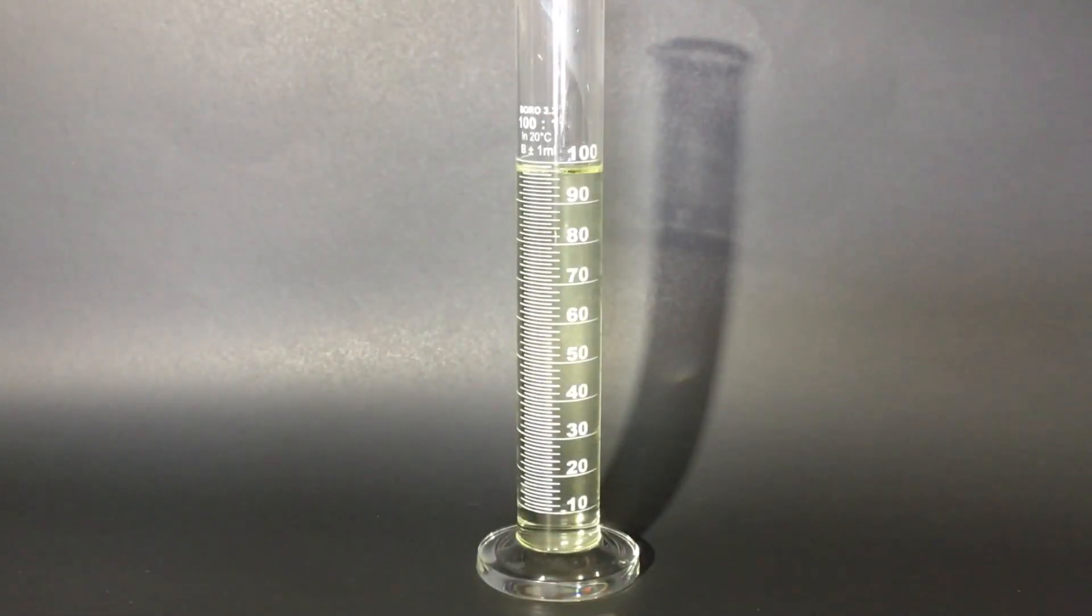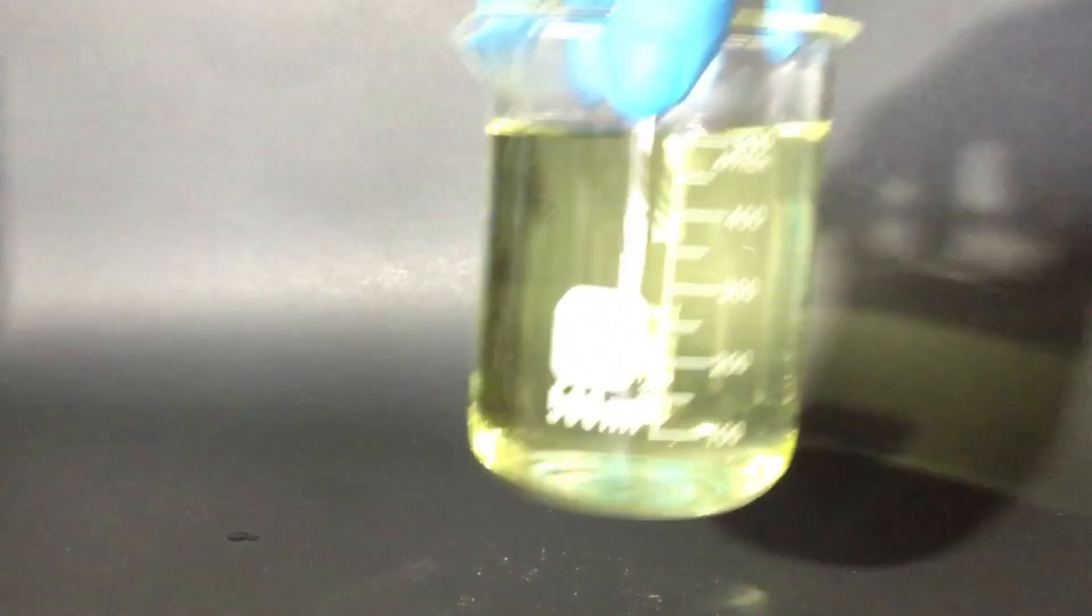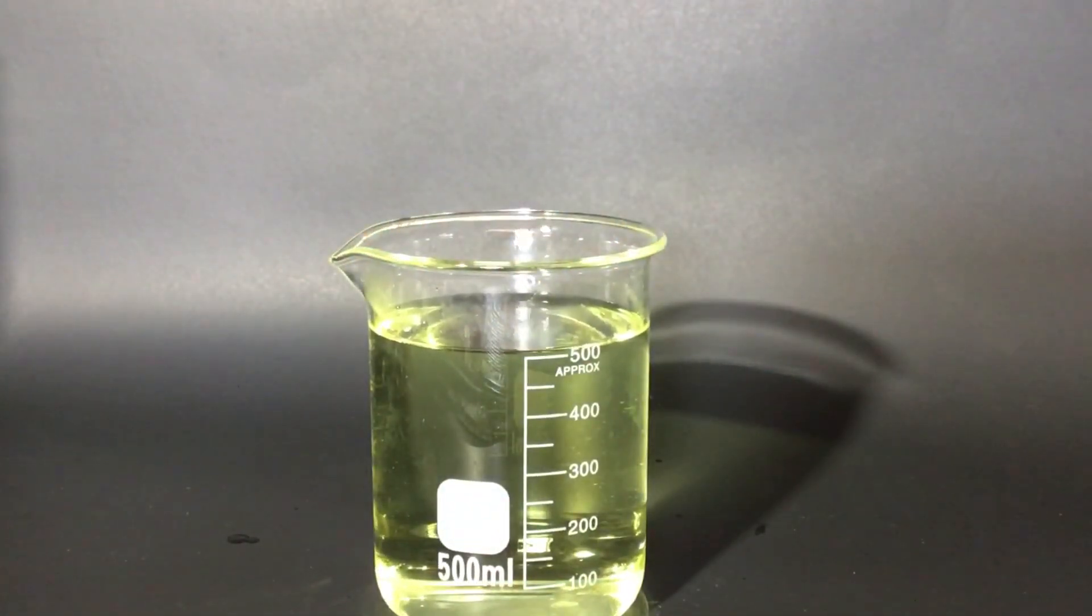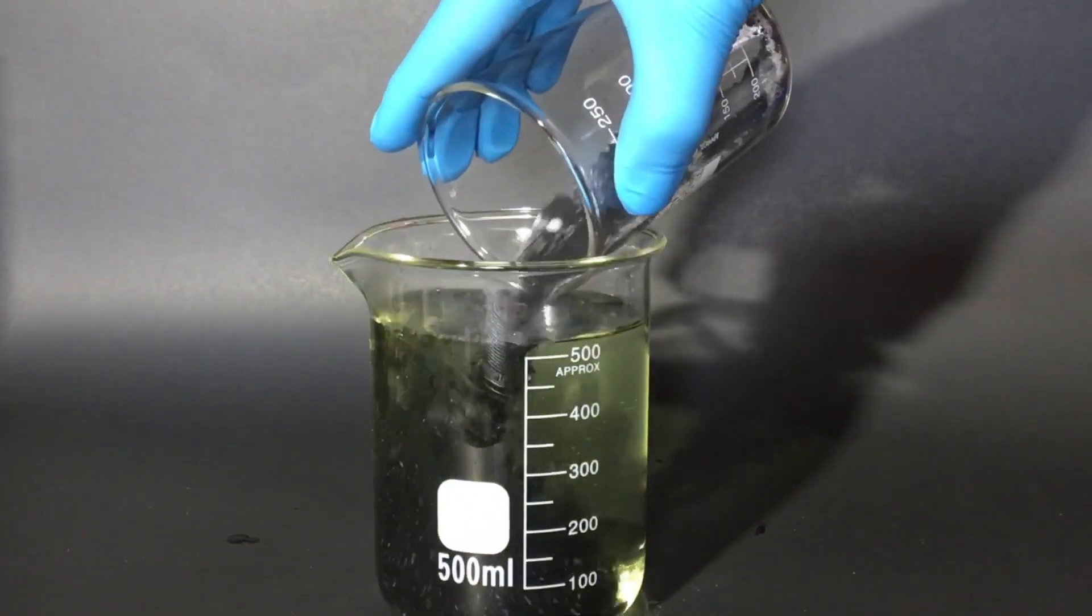I could have just added it all into the beaker at once and still gotten an almost exact amount of bleach I needed, but I still just wanted to use my graduated cylinders. Now what I do is I add all of the solid stuff into the bleach, and this is when I realized I messed up.